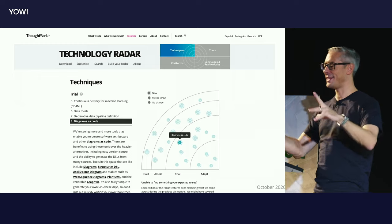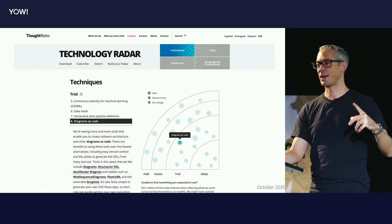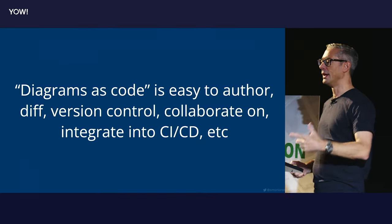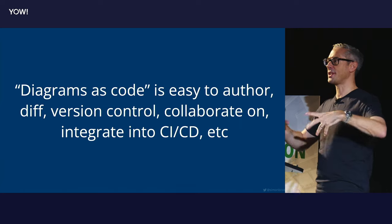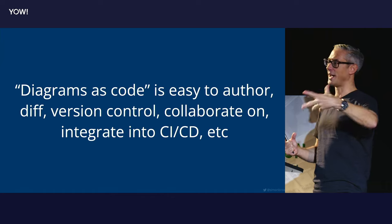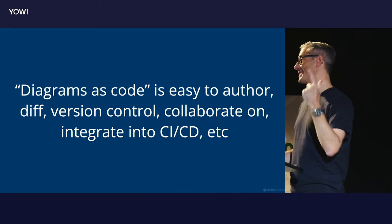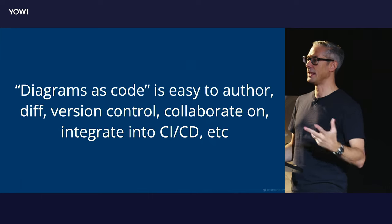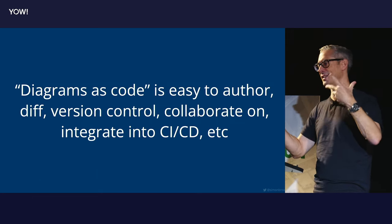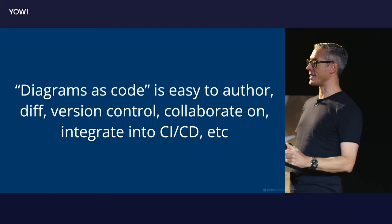Back in the heady days of 2020, the ThoughtWorks Tech Radar blipped 'diagrams as code.' Diagrams as code is basically: instead of using a tool to create a diagram, you write a bunch of text and feed it through a tool, and the tool generates your diagram automatically. These things are nice because as developers we like text — we have tooling to support text, text is very version controllable, diffable, and we can integrate it into our CI/CD build pipelines. There's a ton of great stuff associated with diagrams as code.